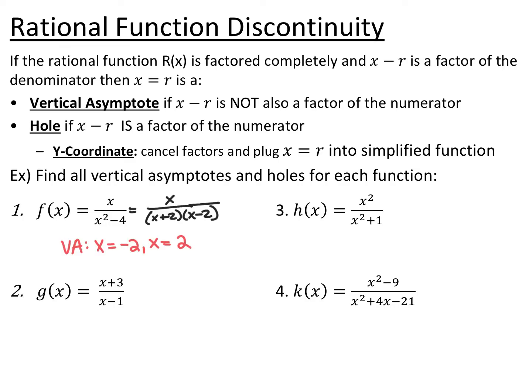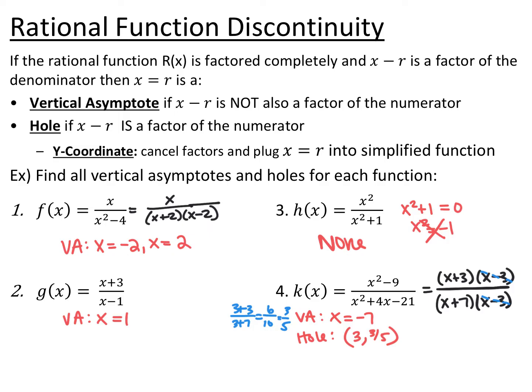For the first example, always factor everything completely—both numerator and denominator. I factored the denominator x squared minus 4 into (x plus 2)(x minus 2). There is no similar factor in the numerator, so they can't be canceled. Therefore, both are vertical asymptotes at x equals negative 2 and x equals positive 2. For number 2, g(x), the denominator and numerator are already factored completely. There's only one thing that makes the denominator zero, and it doesn't also make the numerator zero, so x equals 1 is a vertical asymptote.